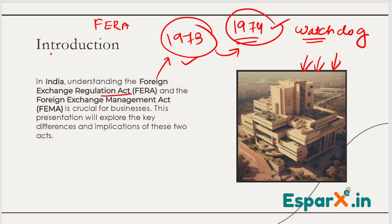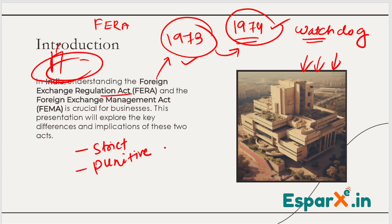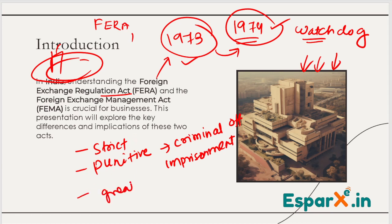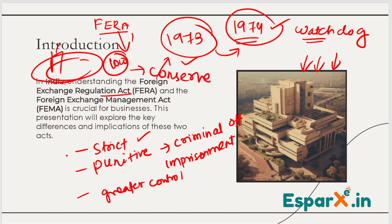However, the limitation was that FERA was very strict and very punitive. Even a little deviation from the FERA Act would lead to a criminal offense, which then led to imprisonment. There was greater government control — the government wanted to maintain strict control. The FERA Act looked at foreign reserves as a scarce resource, something very limited that needed to be conserved.